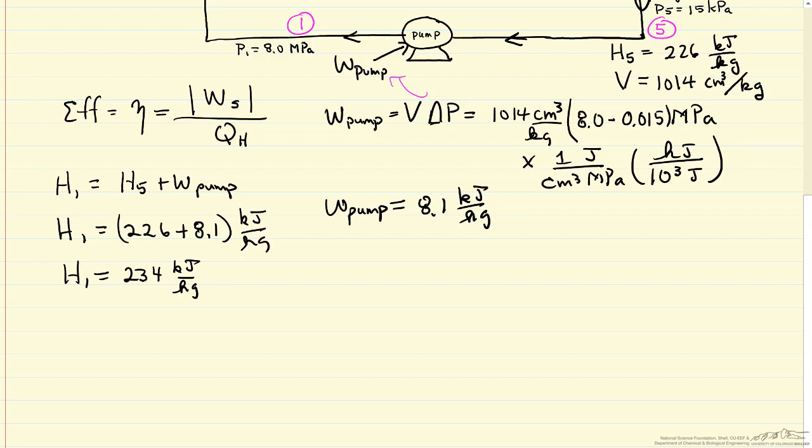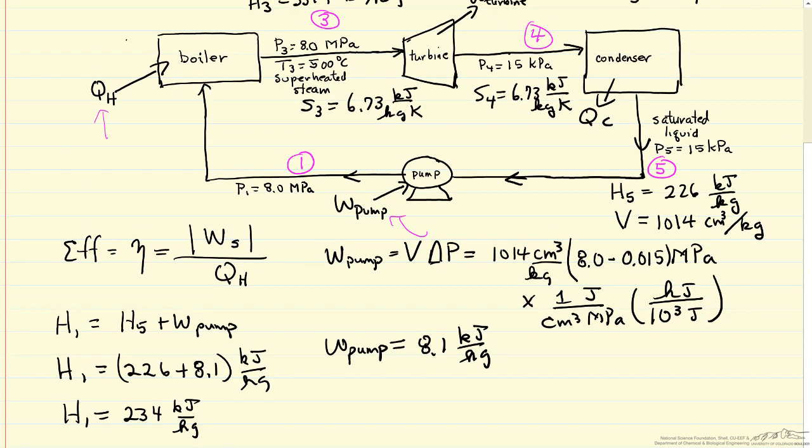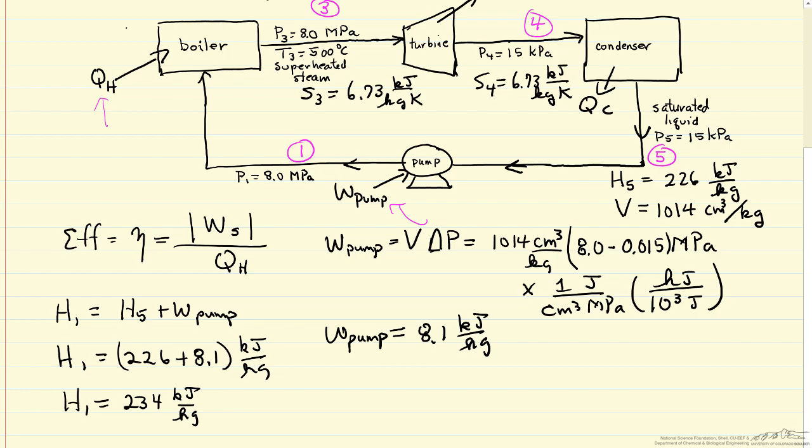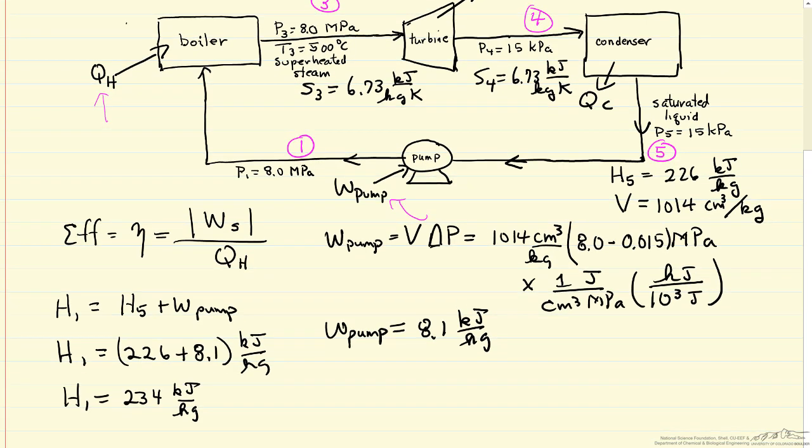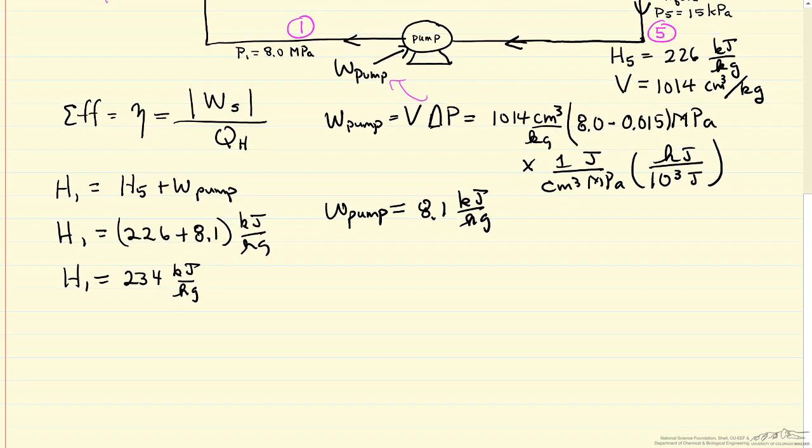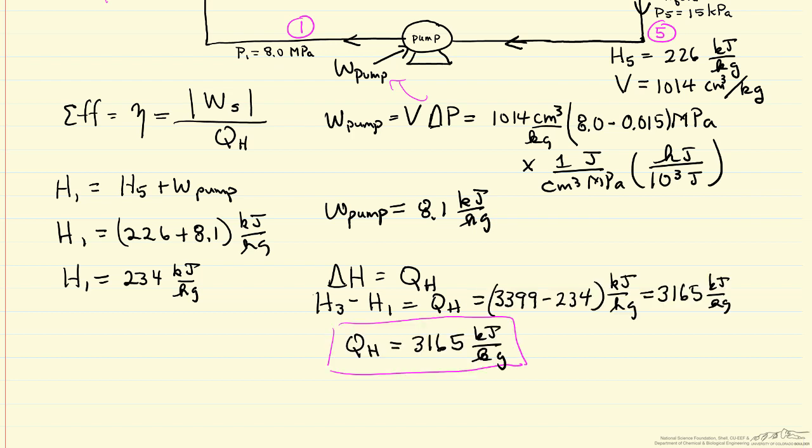Now if I do a balance around the boiler, H3 is the value leaving, 3399. An energy balance around the boiler is delta H equals Q. There's no work in the boiler, and delta H will be the final, H3 minus H1. That's QH, 3165 kilojoules per kilogram. We have one of the numbers we need for the calculation of efficiency.